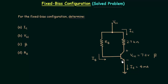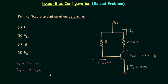This is the circuit given to us, in which RC the resistance connected in series with the collector is equal to 2.7 kilo ohms. IB the base current is equal to 20 micro amps. The emitter current IE is equal to 4 milliamps. VCE the output voltage is equal to 7.2 volts.